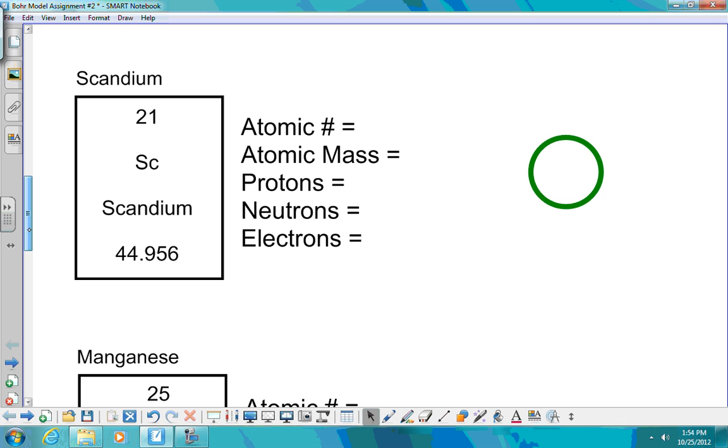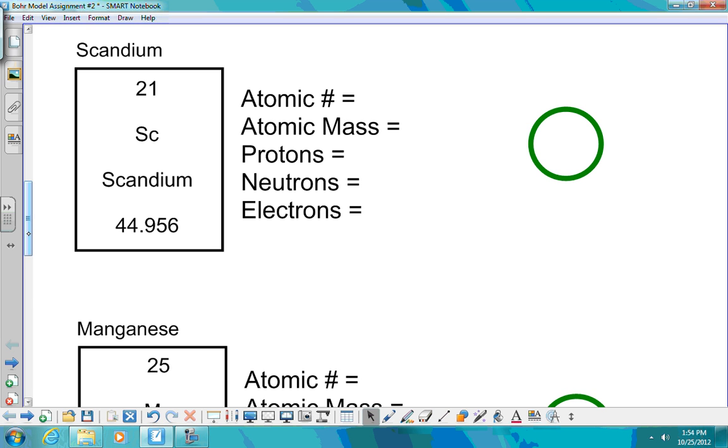Let's go on to scandium. Scandium, 21 is our atomic number. 45 will be our atomic mass. Number of protons equals our atomic number. Neutrons is 45 minus 21. That will give us 24. And we will have 21 electrons because we get that from our number of protons.